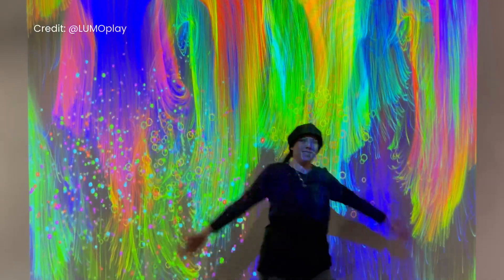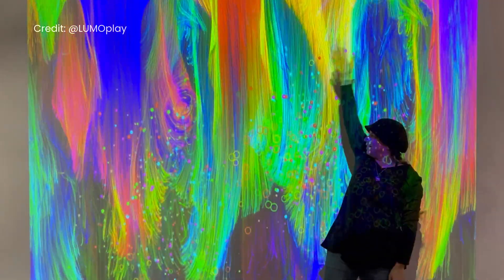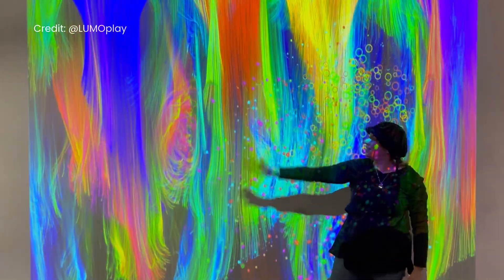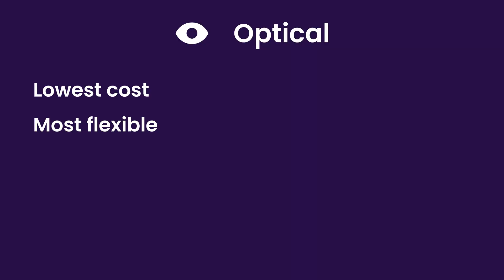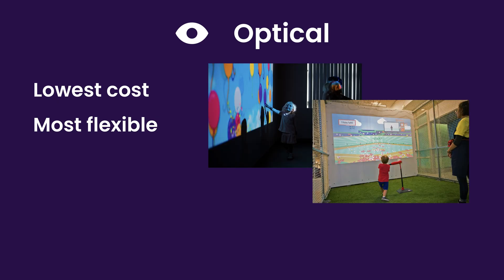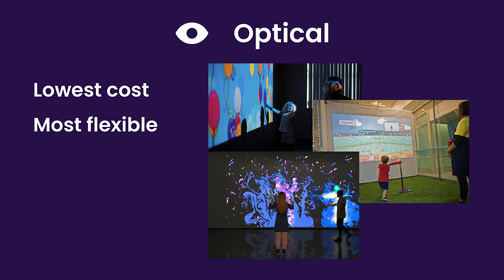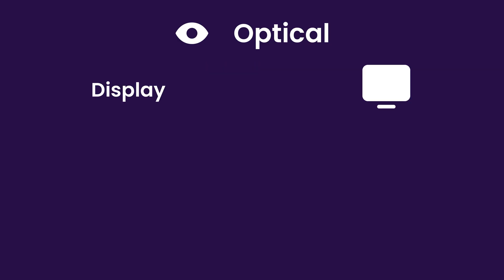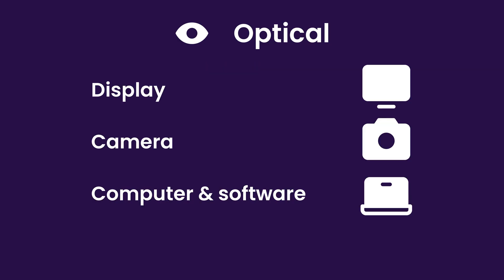The first type of interactive wall is the kind I specialize in and it uses what's called optical imaging. This is the lowest cost and most flexible type of interactive wall. You can design one of these for almost any space, size, and budget. To make an optical imaging interactive wall you need a display, a camera or sensor, and a computer.